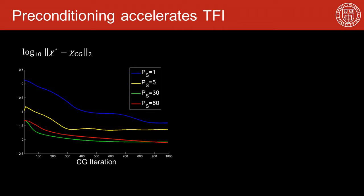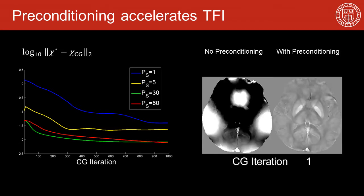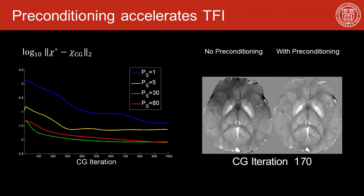The plot on the left from a numerical simulation demonstrates the change of estimation error with respect to the CG iteration number using different weights and preconditioners, and from that plot we can choose the preconditioner which gives optimal convergence. It shows that with the chosen preconditioner, the convergence of total field inversion is indeed improved.